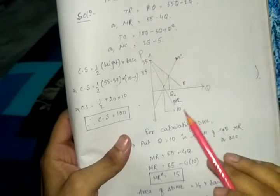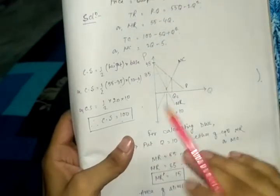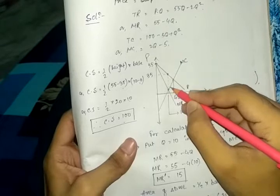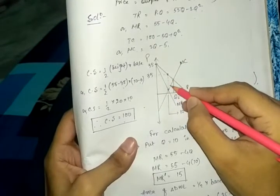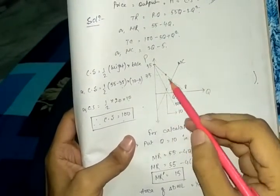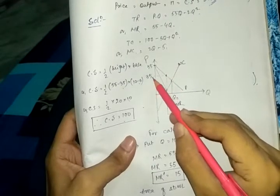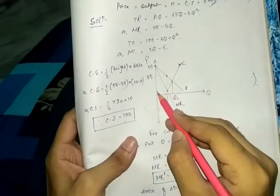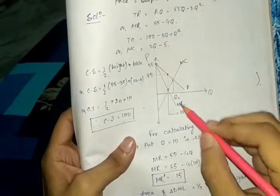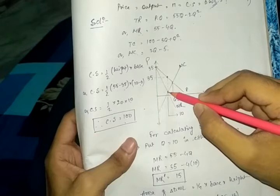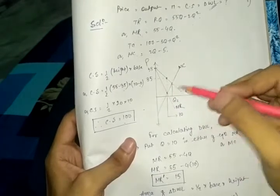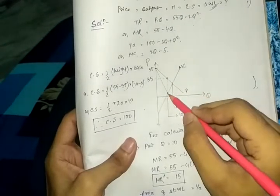Now let's calculate dead weight loss. As I showed in my dead weight loss video for an increasing cost industry, the DWL area is a triangle. The height of this triangle — the first point is 35. To find the second point, we know the value of Q at that point is 10, and at that point Q intersects both MC and MR. So we can put Q into either equation to find the value of that point.